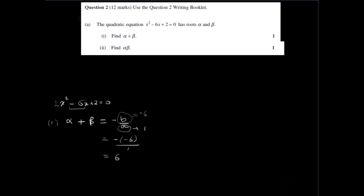Part 2 of the question asks us to find the product of the roots, alpha times beta. That's given by c on a. For quadratic equations, c is the constant at the end, which in this case is 2, and a is 1, so 2 on 1 is 2.